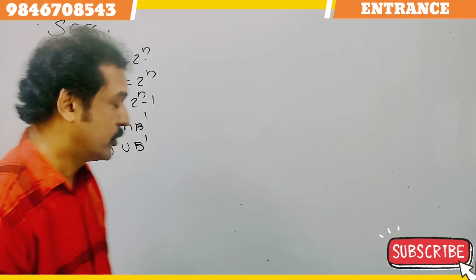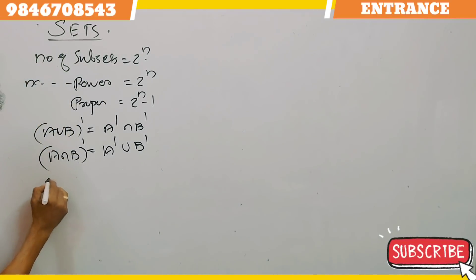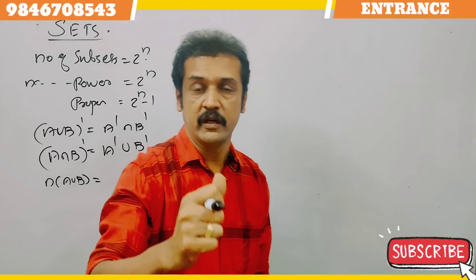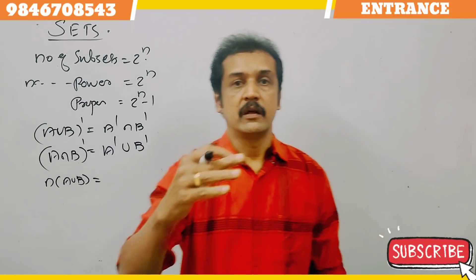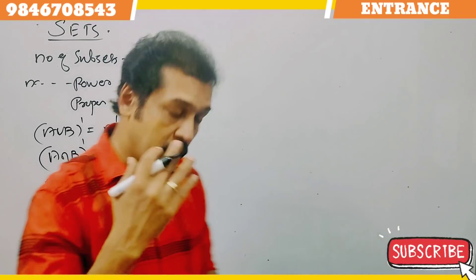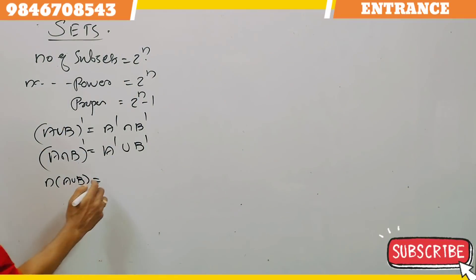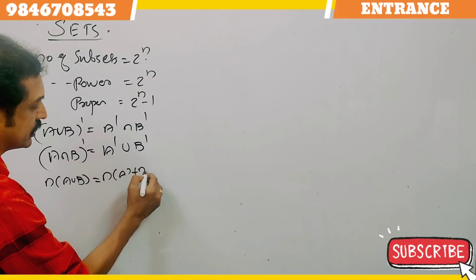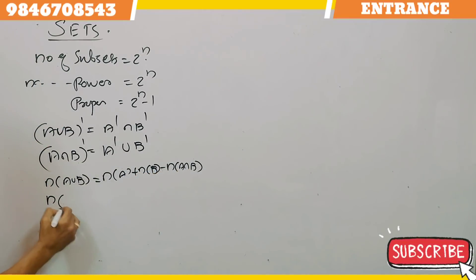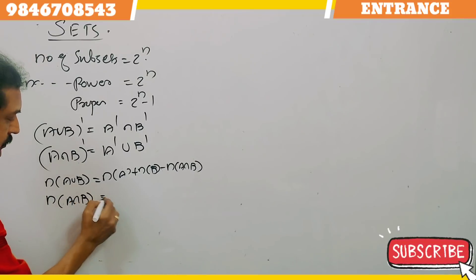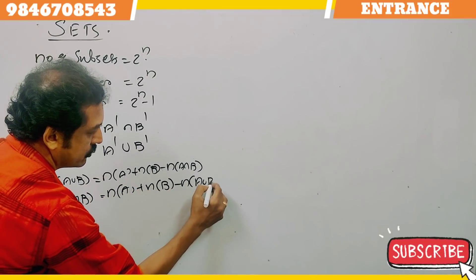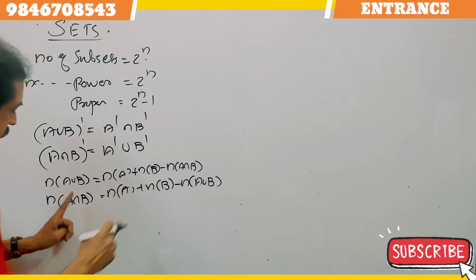The most important result is n of A union B. This involves cardinal numbers and is very important. For example, 70 people, 20 students take tea, coffee, etc. The formula: n(A∪B) = n(A) + n(B) − n(A∩B). From this, n(A∩B) = n(A) + n(B) − n(A∪B).